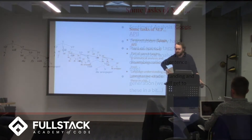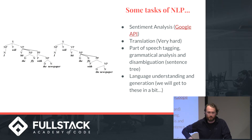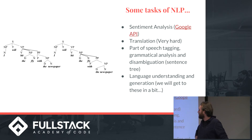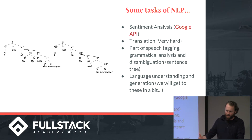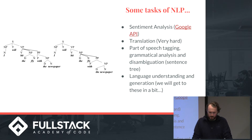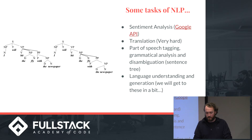I want to talk a bit more about the general field of natural language processing. It's a really big field — not just computer scientists, but linguists, mathematicians, all kinds of people working on a huge number of different problems. One of the big ones that's really popular for developers to use in apps right now is sentiment analysis. The Google Natural Language Processing API does a really good job of this.